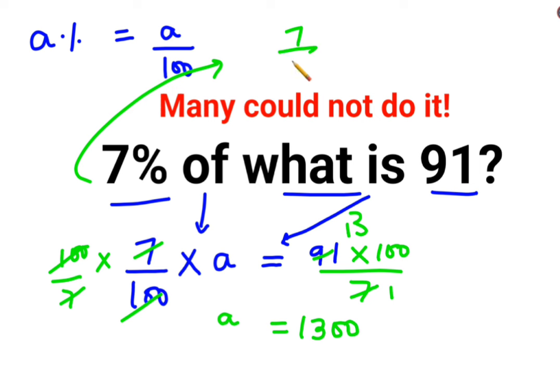So 7% means 7 upon 100 of what? We got that as 1300. Now let's see what is the value. So zeros are canceling. 7 into 13 is nothing but 91. So that is your RHS.